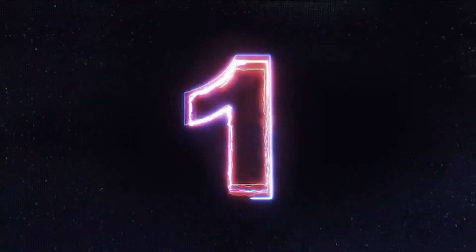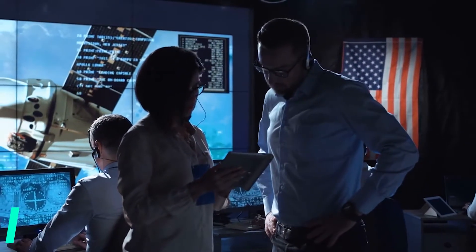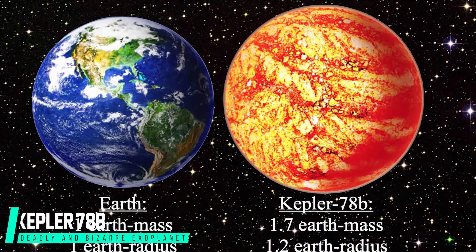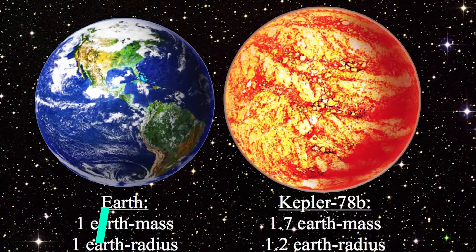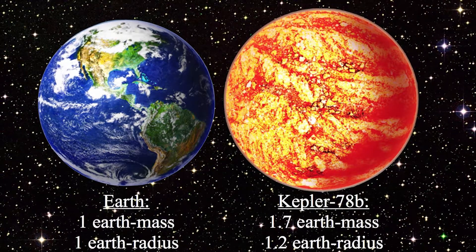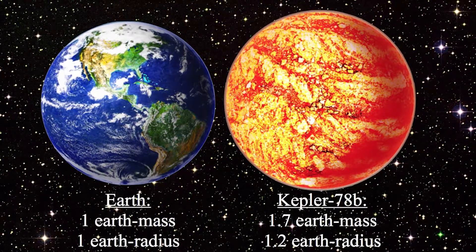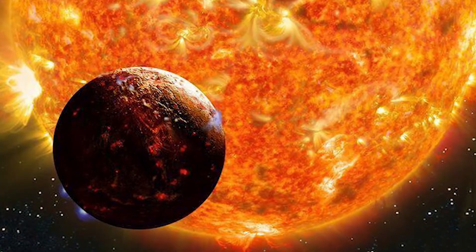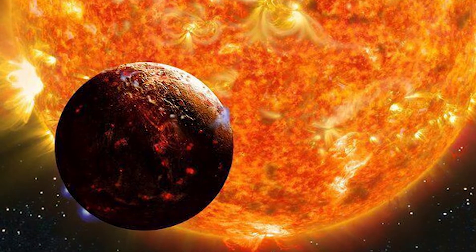Number one. Search for Earth-like planets is one scientists will likely always be working on. In 2013, two research teams identified a planet called Kepler-78b which is about the same size, density, and composition as Earth. It has a radius only 1.2 times that of Earth's, and it is rocky.